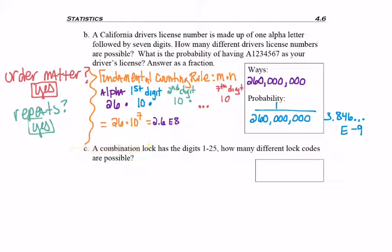Next question. A combination lock has digits 1 through 25. How many different lock codes are possible? So, you know, maybe even think of a safe, if you're not used to, if you ever had a locker combination where you spun the wheel. You know, you always see the bad guy breaking into the safe, spinning the wheel. So first question. Does order matter? And yes, because any different combination won't get you into your lock or your safe.